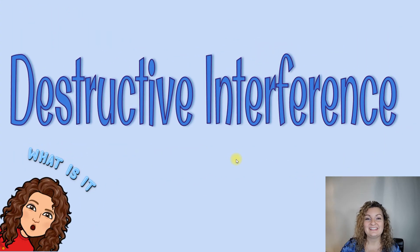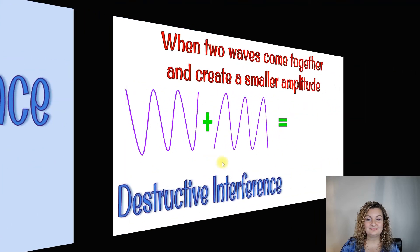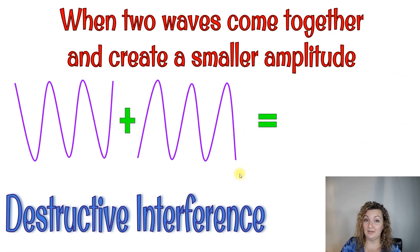Destructive interference. So destructive interference is the opposite of constructive interference. And that's when two waves come together to create a smaller amplitude or no amplitude at all. So if two waves come together, we have to have a crest overlapping a trough now. So it's going to reduce the amplitude, create a shorter wave or no wave at all. As you can see here, no disturbance.